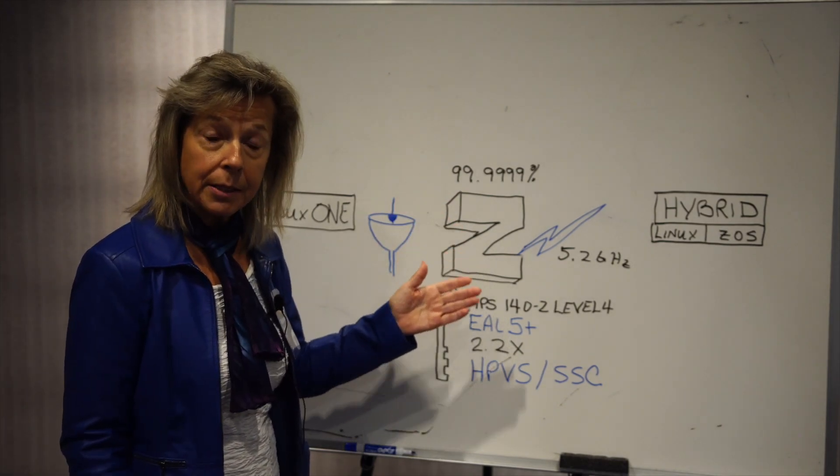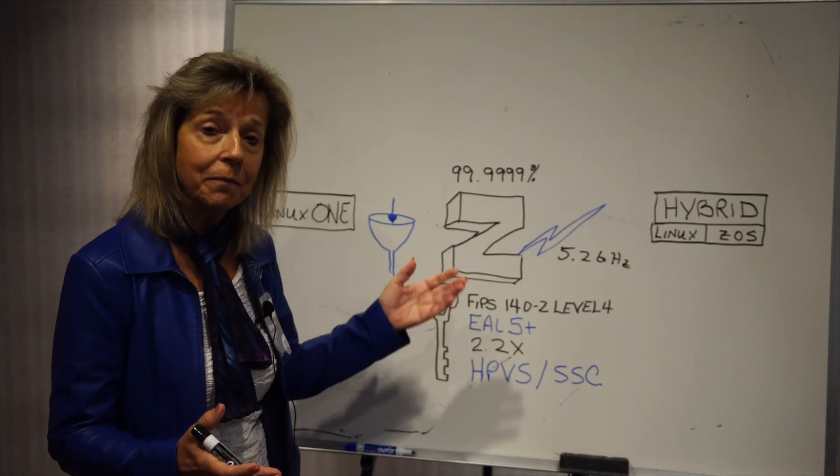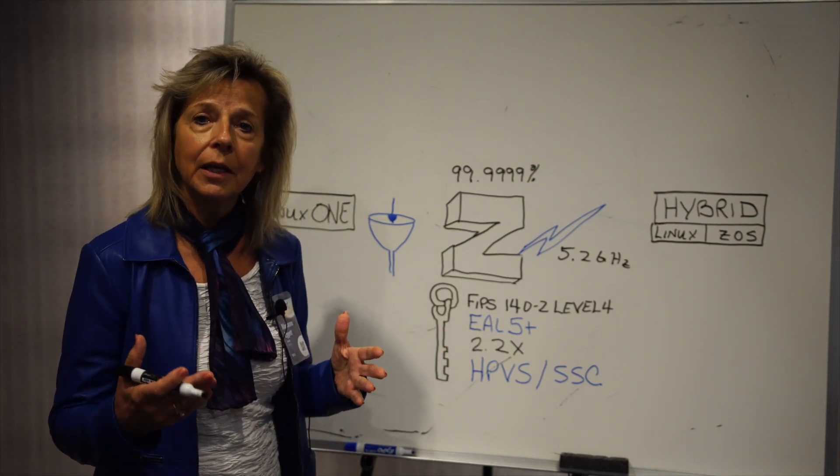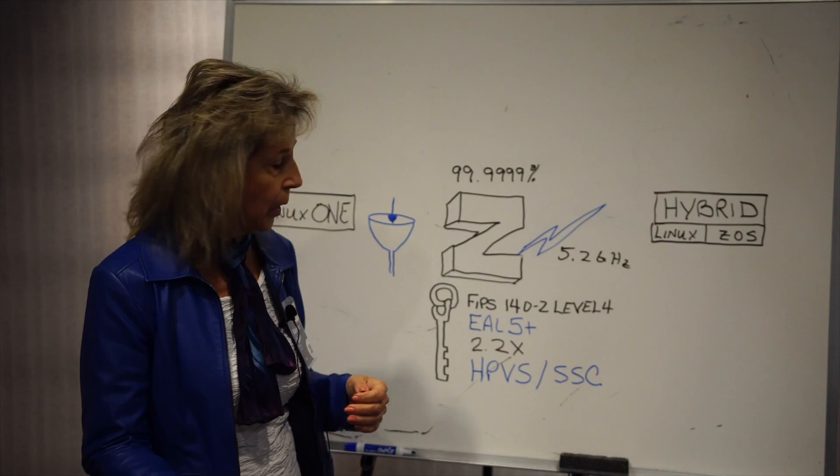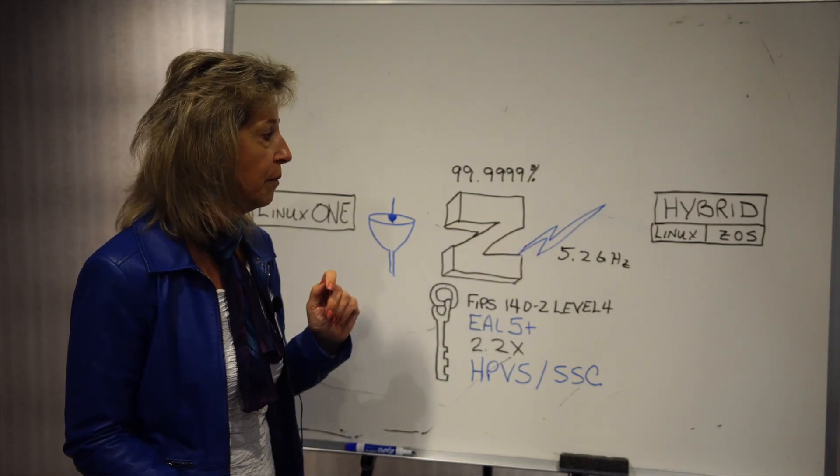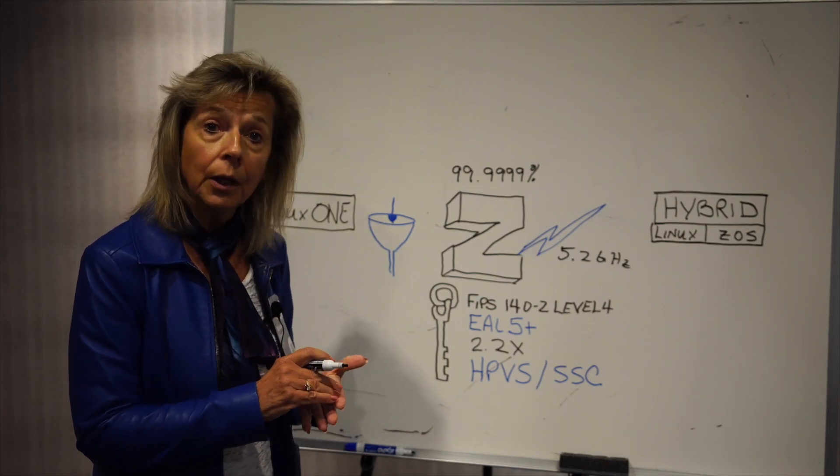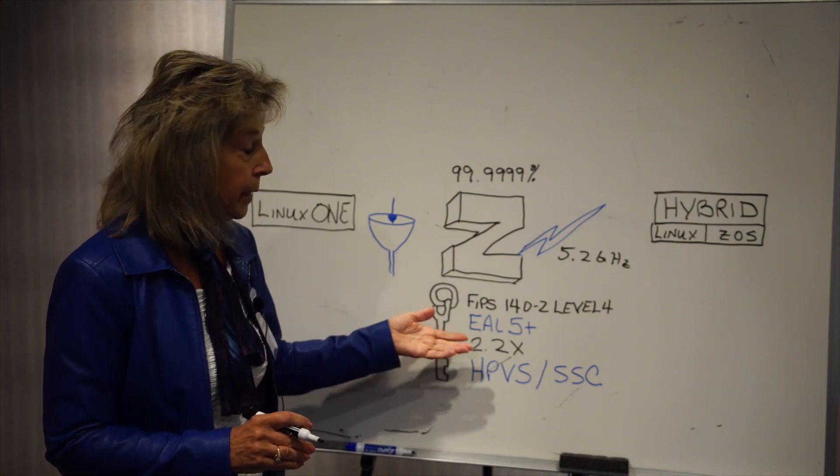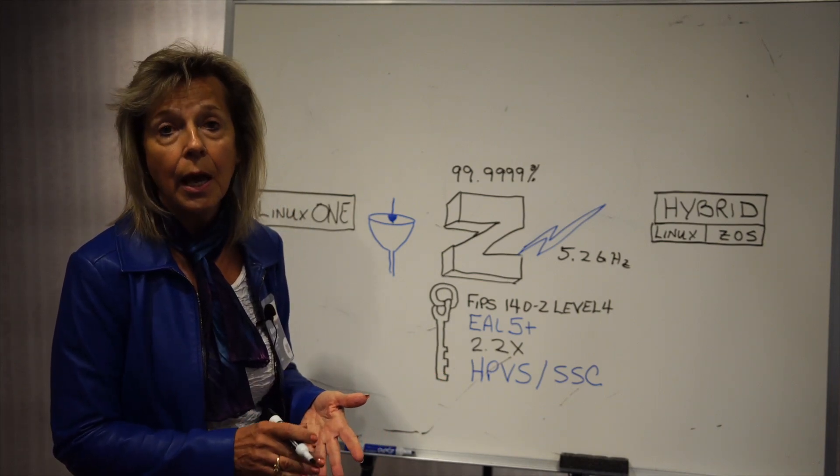So in one Z box I can have 85 logical partitions which is equivalent to having 85 separate physical servers on this box. The 2.2 times that is the improved encryption speed from an x86 environment. So 2.2 times the encryption speed for this not only includes the 5.2 gigahertz but it includes the architecture that the IBM Z has including a crypto processor on the chip and a separate card that is completely dedicated to the encryption process for your data at rest and your data in flight.